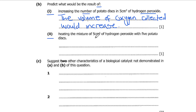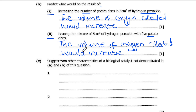Next part: Heating the mixture of 5 cubic centimeters of hydrogen peroxide with potato discs. We are also going to have an increase in the volume of oxygen collected because increasing temperature up to a certain degree will also increase the rate of the chemical reaction. It's important to note that here we are only heating a bit and not boiling, so the temperature is not too hot and we are still within the optimum temperature of the enzyme — because when we heat above the optimum temperature the rate of reaction will reduce.